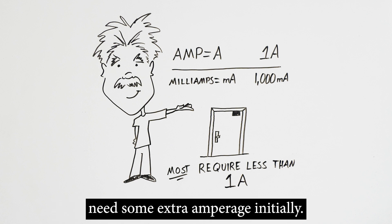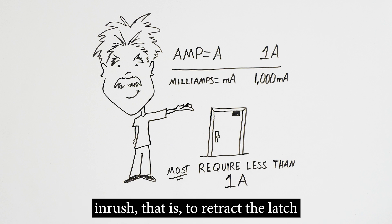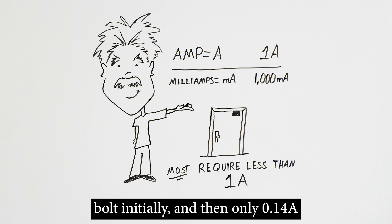The QEL device, for example, requires 1.4 amp inrush, that is, to retract the latch bolt initially, and then only 0.14 amps holding to keep the latch retracted.